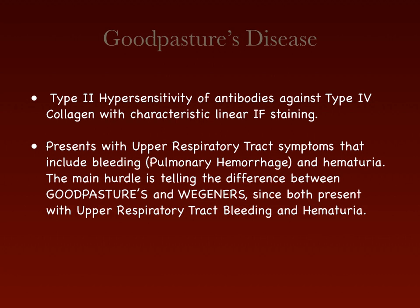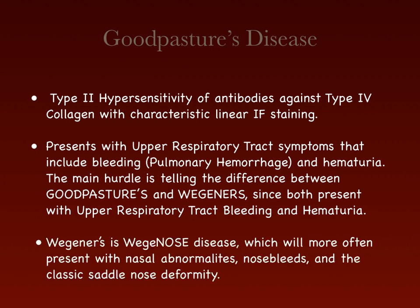Another disease that resembles Goodpasture's is Wegener's granulomatosis, now called granulomatosis with polyangiitis. On paper both show upper respiratory tract bleeding and hematuria. However, Wegener's more often presents with nasal abnormalities, nosebleeds, and the classic saddle nose deformity — the bleeding is nasopharyngeal rather than pulmonary.